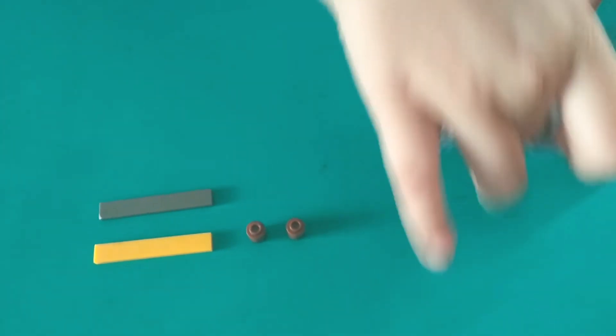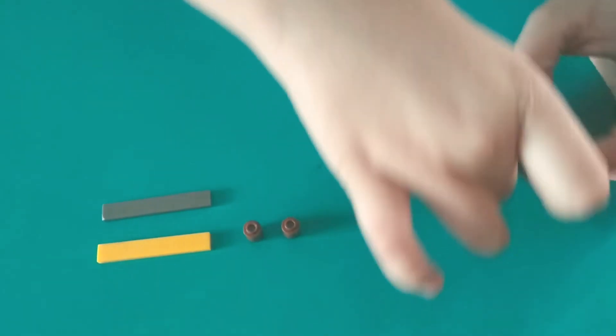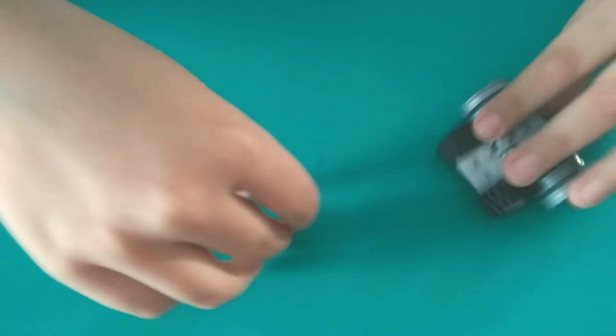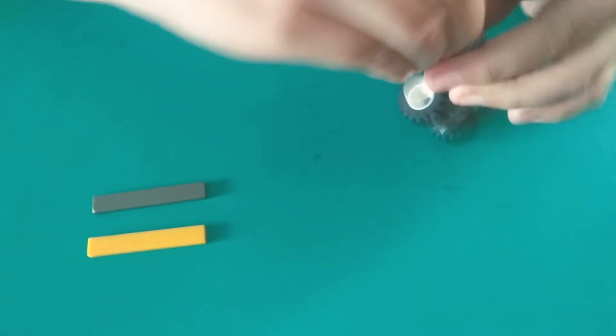Then this is ready, check if it moves. Then take two round parts like this, one over here and the second one over here.